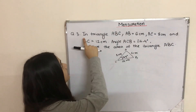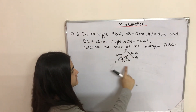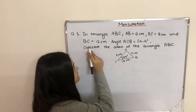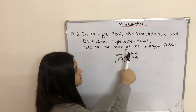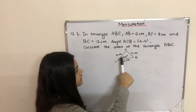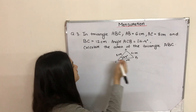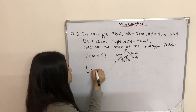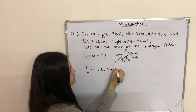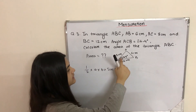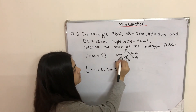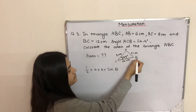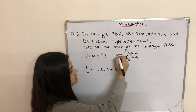Finally, question number three: in triangle ABC, AB equals 6 cm, AC equals 8 cm, and BC equals 12 cm. Angle ACB equals 26.4 degrees. Calculate the area of triangle ABC. We use the formula half into a into b into sin theta. We take two sides and their included angle — in this triangle we know angle ACB, so we take sides CB and CA which are 12 cm and 8 cm.